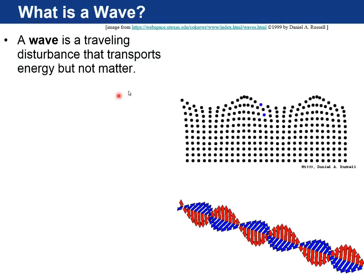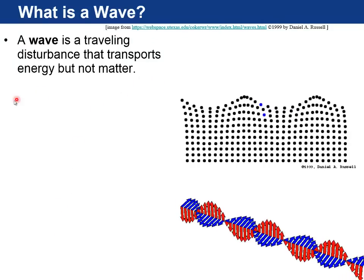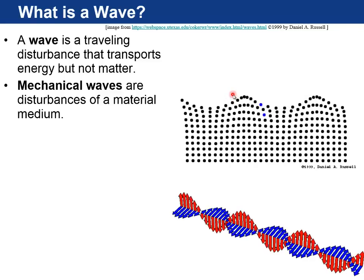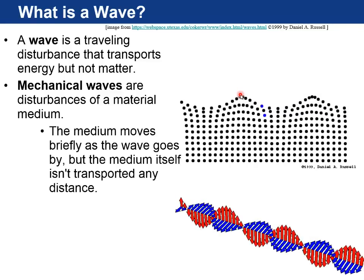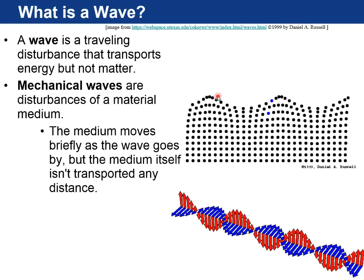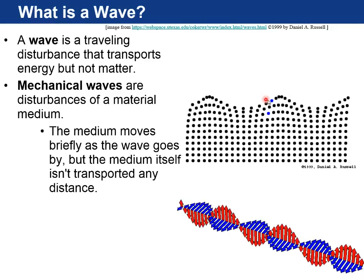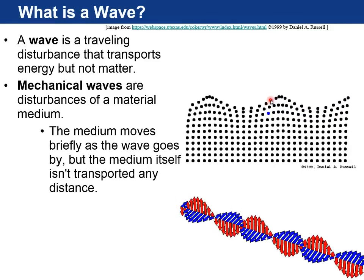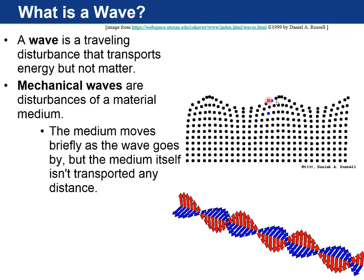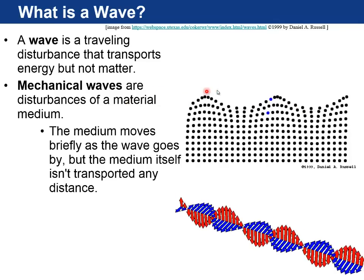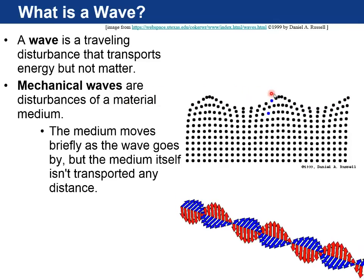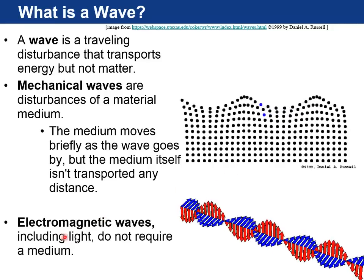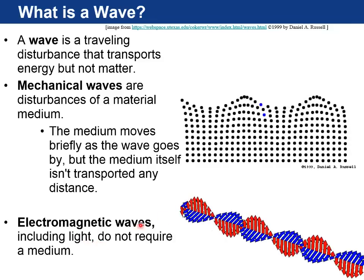A wave is a traveling disturbance that transports energy, but not matter. Mechanical waves are disturbances of a material medium. So the medium will oscillate in place, if you look at these blue dots, and move briefly as the wave goes by, but the medium itself isn't transported any distance. But you can actually track the waves and see how far they go in a certain time and get the wave speed out of that. Electromagnetic waves, including light, do not require a medium.